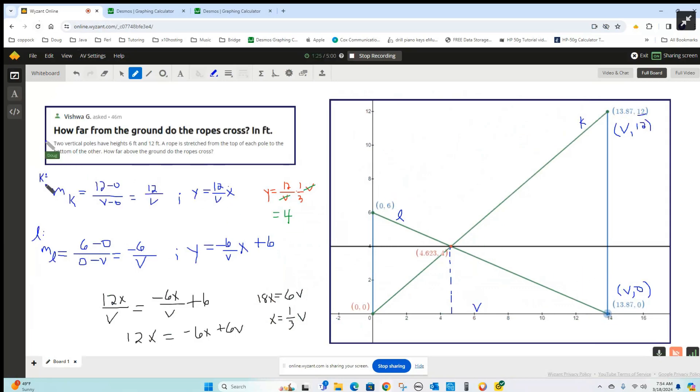The slope of K is, using point slope, this point has coordinate V comma 12. And we're going through these two points, so the slope is 12 minus 0 over V minus 0, or 12 over V.